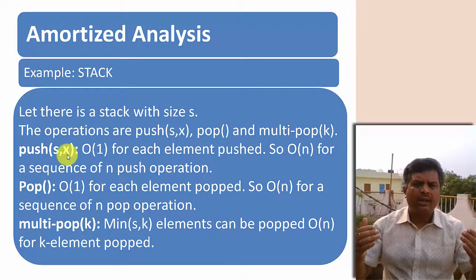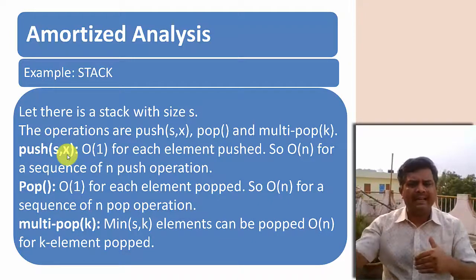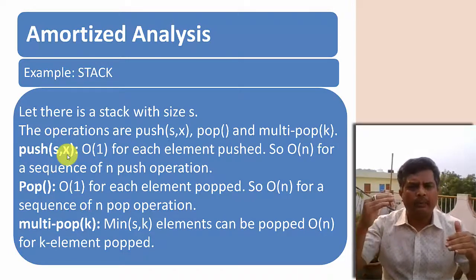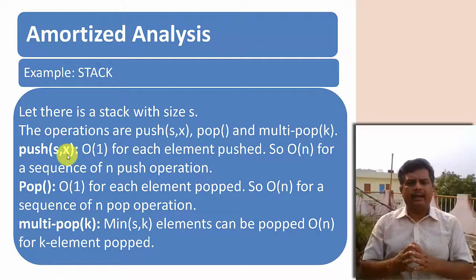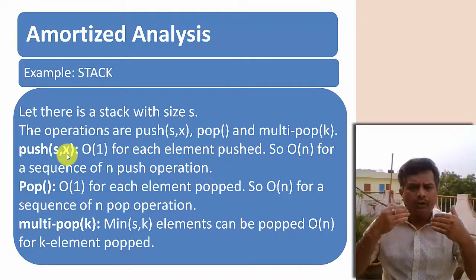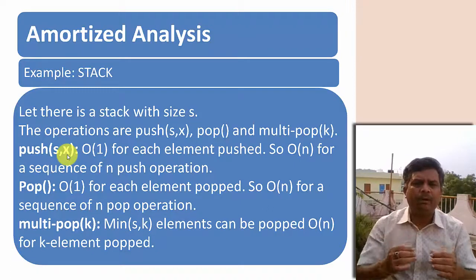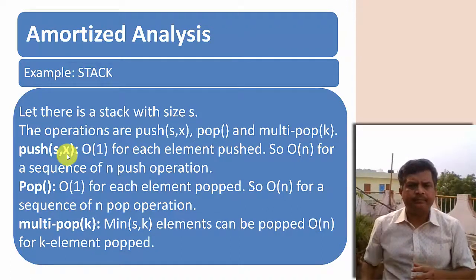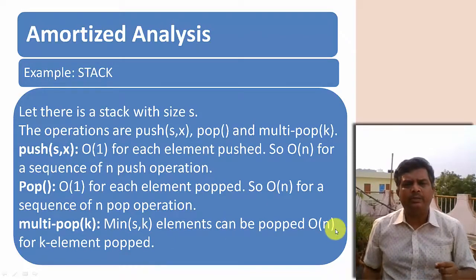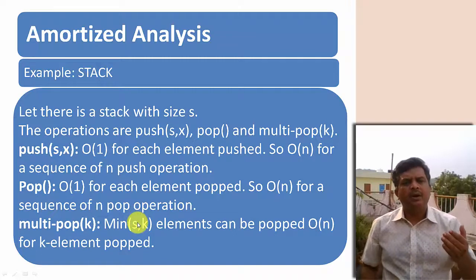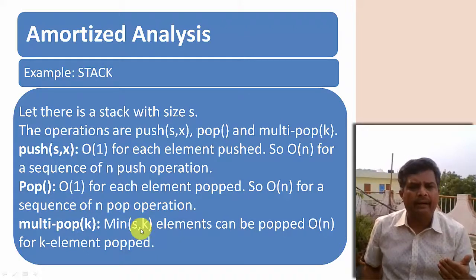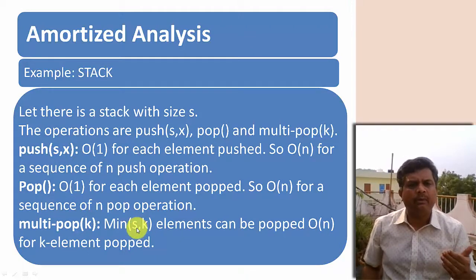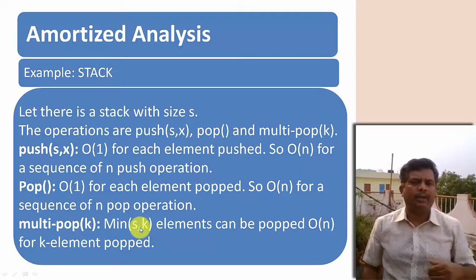The pop operation deletes the element on top of the stack, taking O(1) time. For multi-pop, it will pop a minimum of s and k elements — meaning if the stack size is s and we want to pop k elements, whichever is minimum between s and k, that many pops can be performed. The cost for k elements popped is O(n) in the worst case.